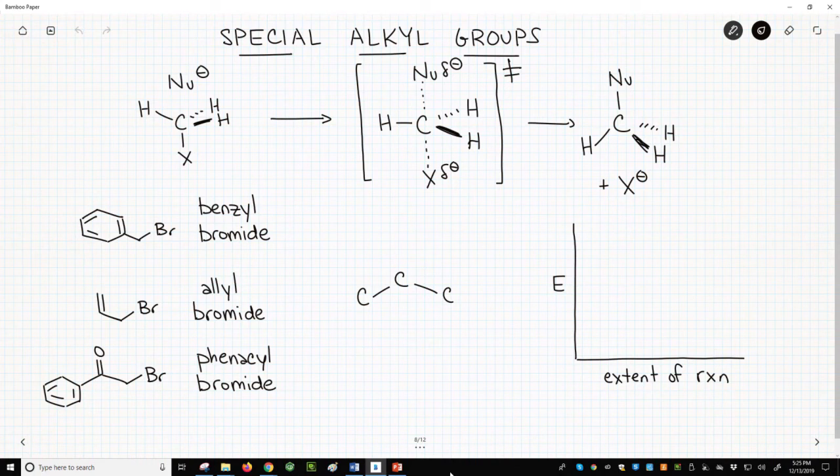A planar carbon calls back to trigonal planar geometry that we saw in sp2 carbons. Many people actually consider the carbon in the transition state to be sp2 hybridized.